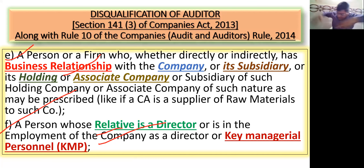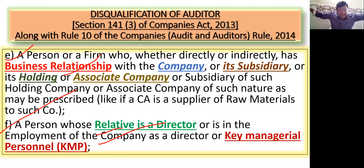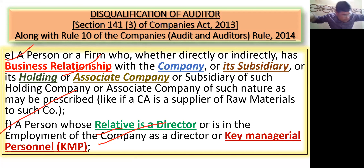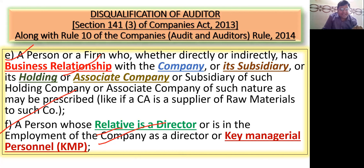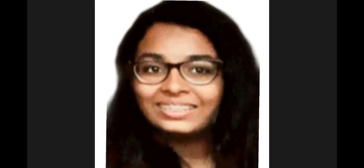देखो कितने सारे disqualifications हैं — CA बेचारे को जहाँ भी पाँव रखने पड़ते हैं, देखना पड़ता है। जब वो किसी company का auditor appoint होता है, तो कितनी independence दिखती है — independent auditor। मतलब कोई ऐसा relation नहीं होना चाहिए, एकदम independent person होना चाहिए।